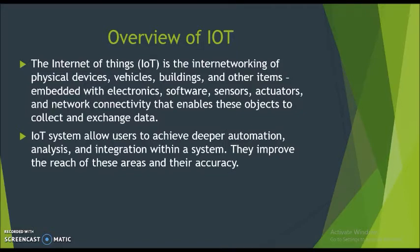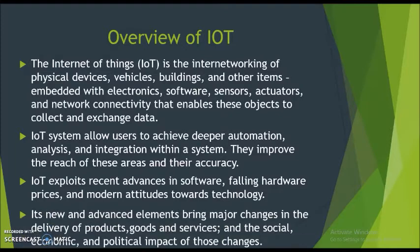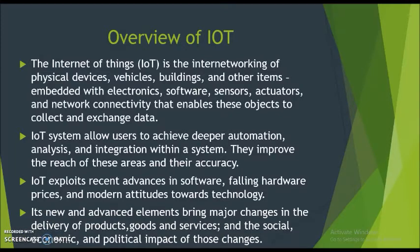IoT systems allow users to achieve deeper automation, analysis, and integration within a system. They improve the reach of these areas and their accuracy. IoT exploits recent advances in software, falling hardware prices, and modern attitudes towards technology. Its new and advanced elements bring major changes in the delivery of products, goods, and services, and have social, economic, and political impact.